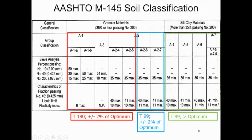Inspectors must be aware that clay embankments compacted at higher moisture content may pass density and moisture requirements on a nuclear density test, but when loaded with construction equipment or proof rolled, they may pump and rut. The primary concern is stability of the lifts. If any pumping or rutting is observed, we must go in, dry those soils back, compact them at a drier moisture content, and then accept the risk of post-construction swell. Stability of the lift is the primary concern for the roadway.